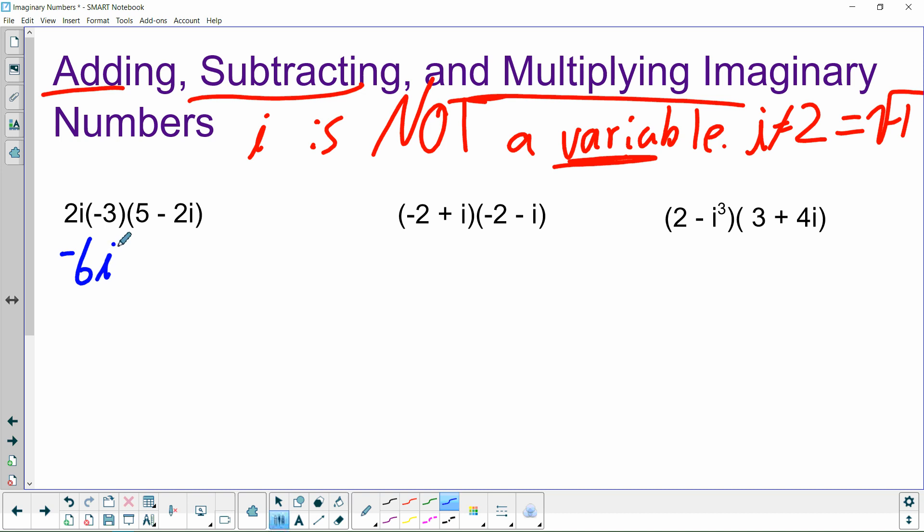Like x times x is x squared. i times i would be i squared. 2 times x would be 2x, though. So 2i times negative 3. Negative 3 times 2 is negative 6. And then the i doesn't have another i to multiply to, so we just bring it down. Then we have 5 minus 2i. And now, because we have a single term multiplied to a binomial, meaning there's two terms inside the parentheses, we distribute the coefficient to the terms in the binomial.